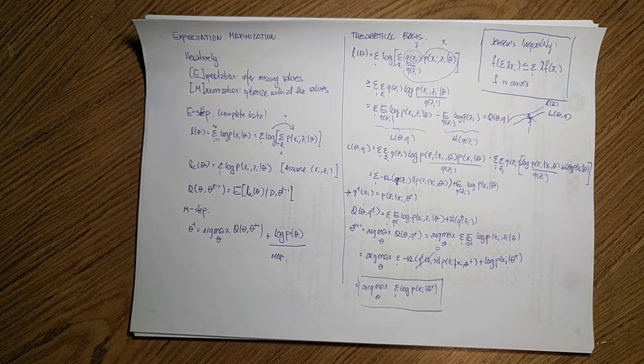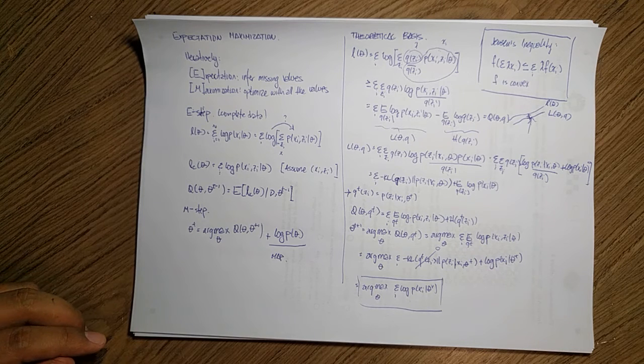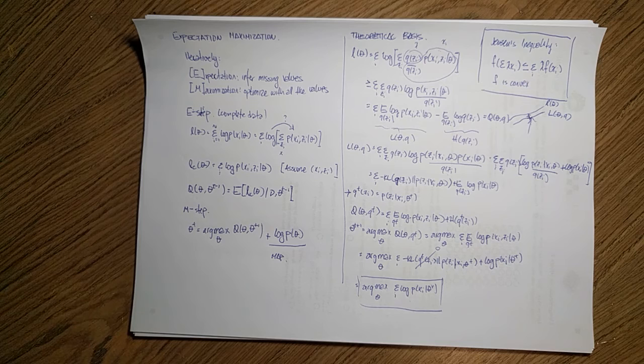So that is really cool. We can just do this iterative process of computing the expectation step and then the maximization step, going back and forth, and that guarantees our solution. In the next part, we will see an example of how to use this with specific distributions. See you there.